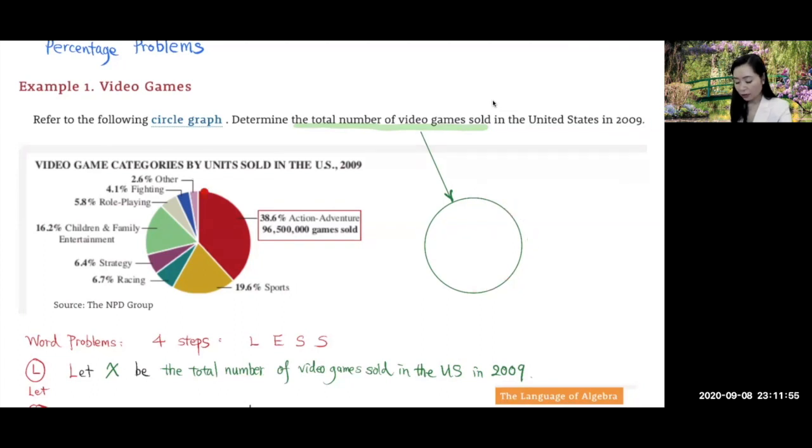So we know this section here. This section here is this many number of games. We know that this section is 38.6% of this total. Now we try to find the total number of games.